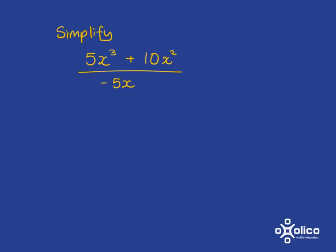If we were asked to simplify this, we can go ahead and factorize. So from the top, we see we can take out a 5. There's an x³ and an x², so we can take out the x². And we'd be left with x + 2, and at the bottom, -5x.